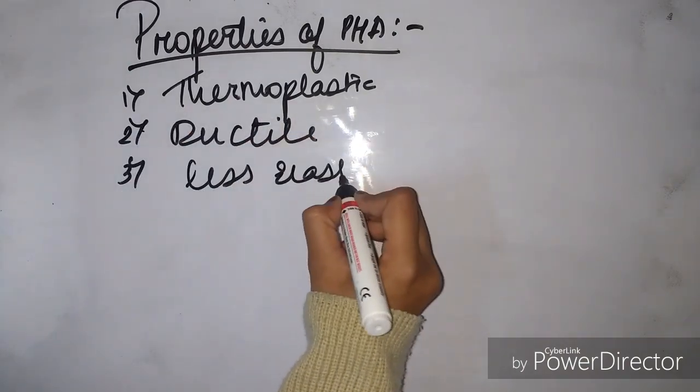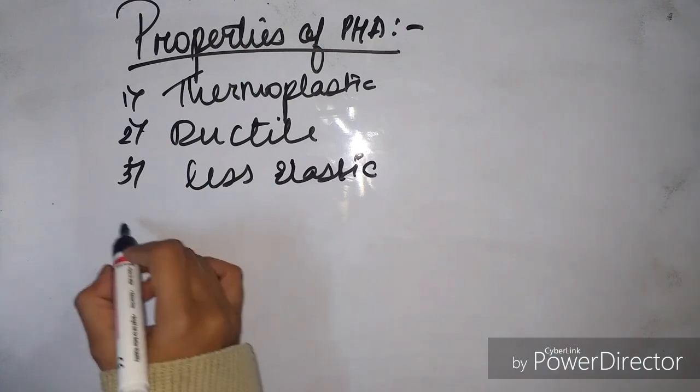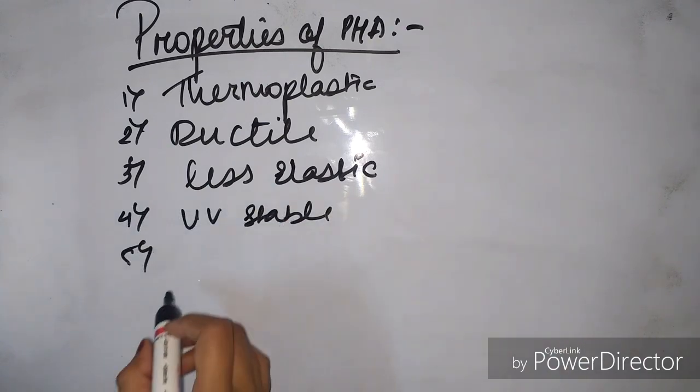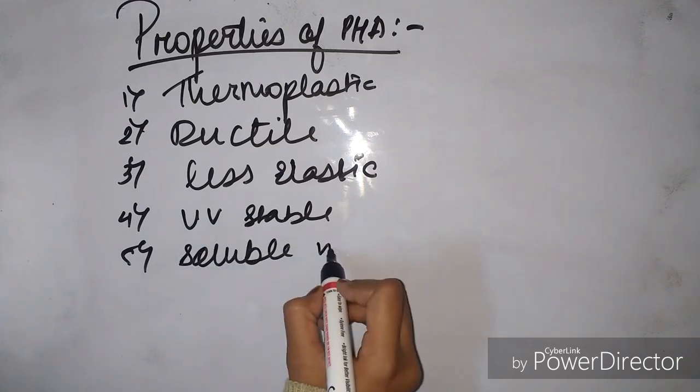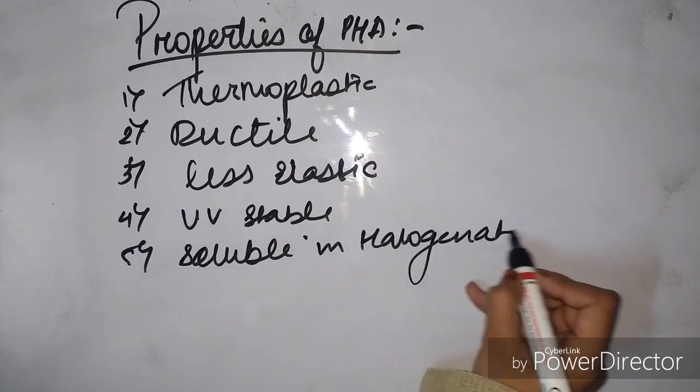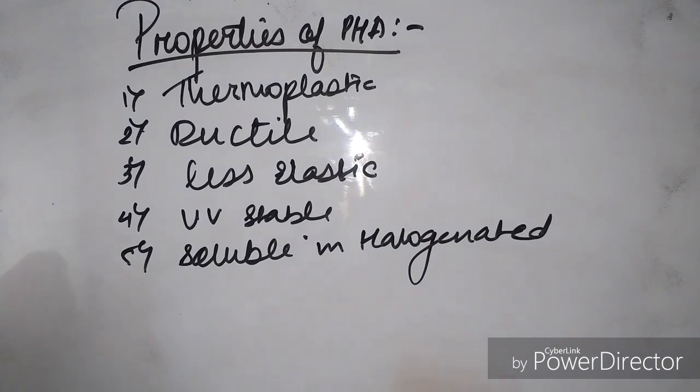Third, they are less elastic. Fourth, they are UV stable, which makes them more sustainable. Fifth, they are soluble in halogenated solvents like chloroform.